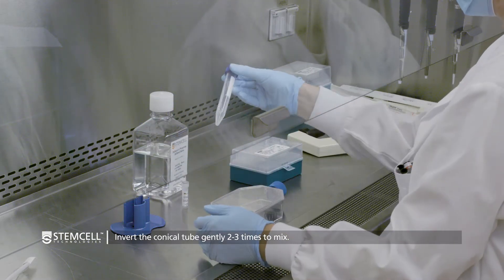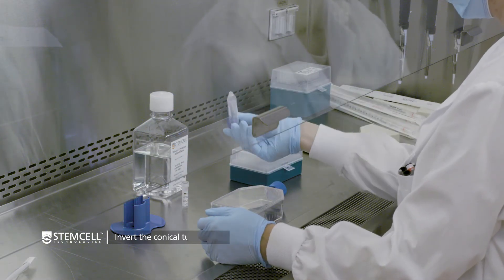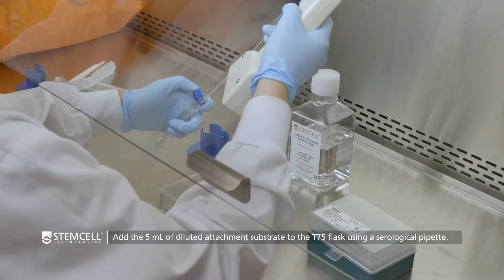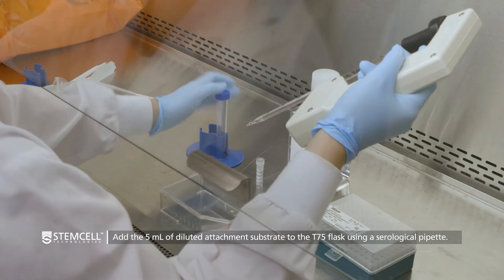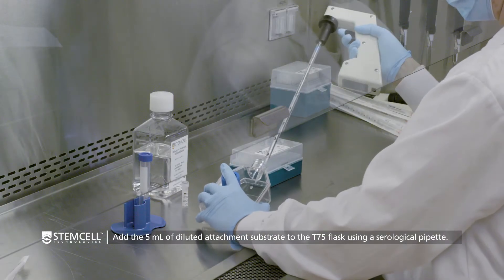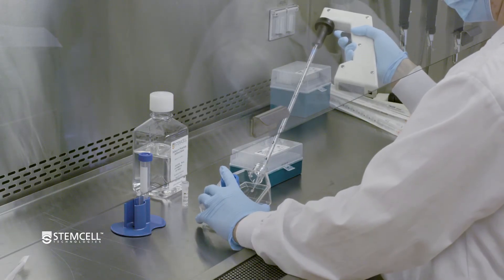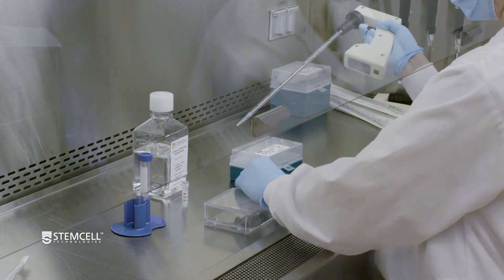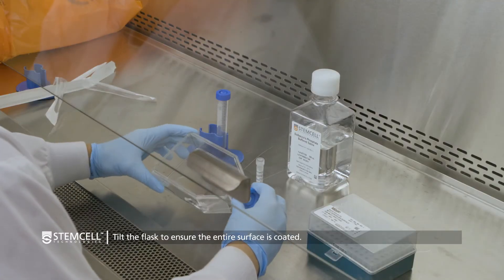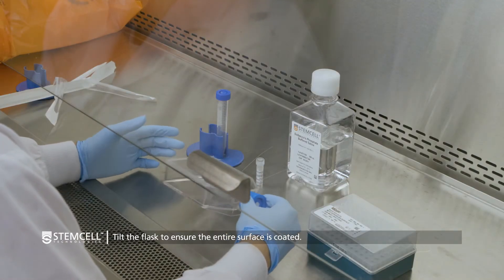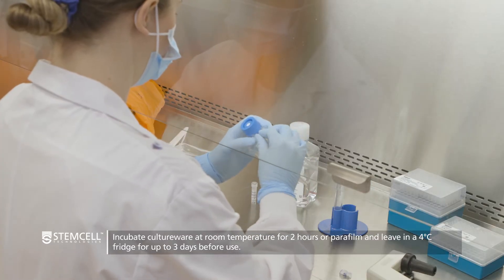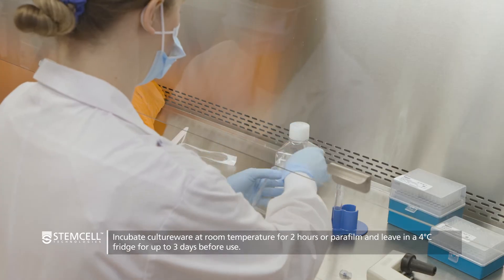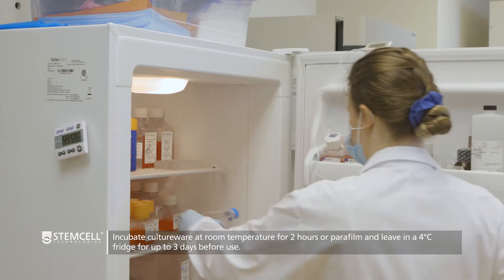Invert the conical tube gently two to three times to mix. Add 5 milliliters of diluted attachment substrate to the T75 flask using a serological pipette. Tilt the flask toward the corner to ensure that the entire surface is coated. Incubate at room temperature for 2 hours or parafilm and leave in a 4 degree fridge for up to 3 days before use.